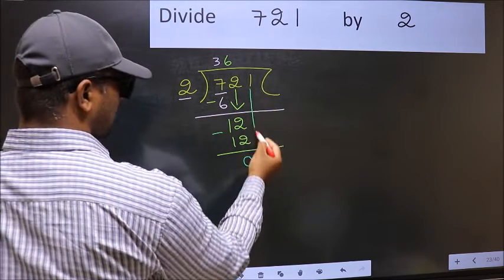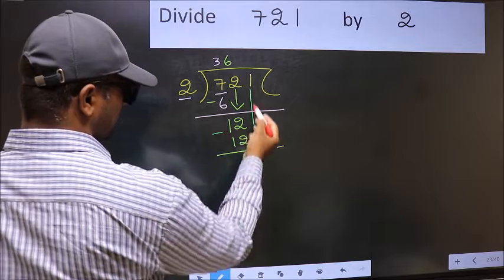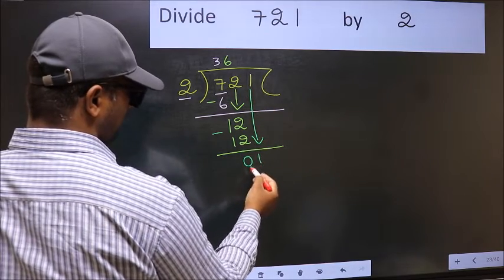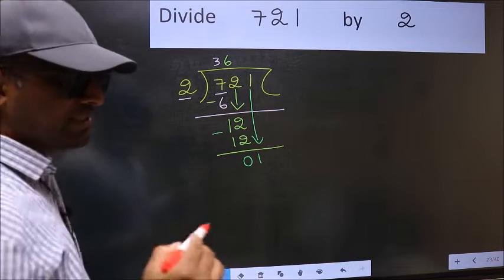After this, you should bring down the beside number. So, 1 down. Over here, the mistake happens.